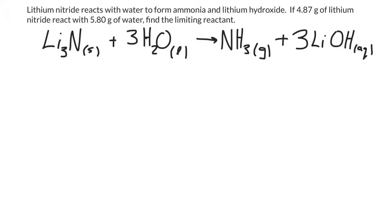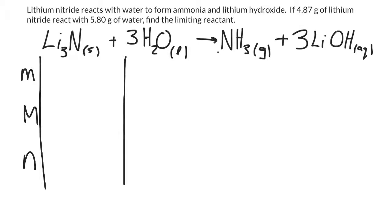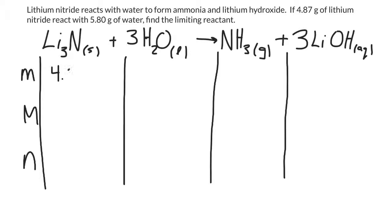I'm going to start by setting up my stoichiometry grid the same way I always do: mass, molar mass, and number of moles. I'll fill in all the values that I know. I have 4.87 grams of lithium nitride and 5.80 grams of water.